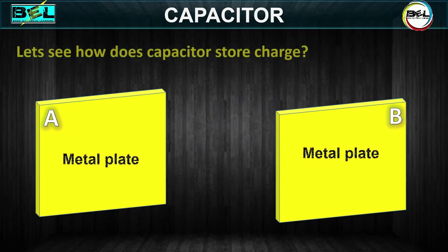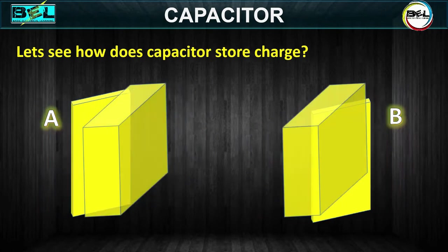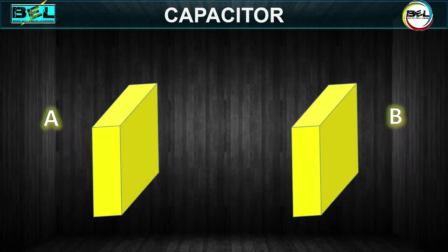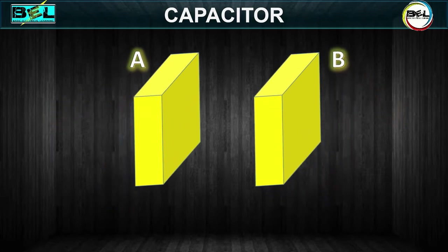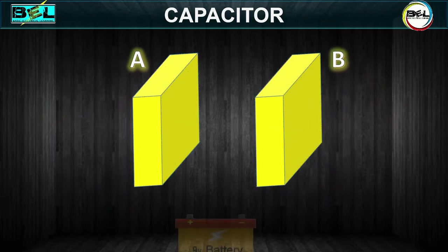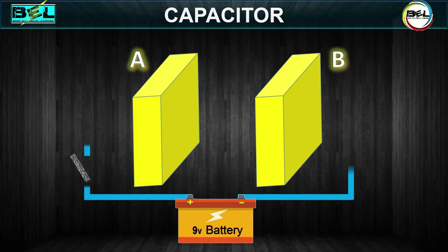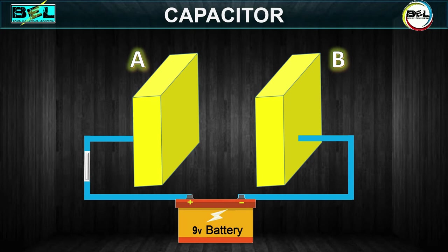Let's see how a capacitor stores charges. When a capacitor is connected across a source of direct current, such as a storage battery, and the switch is then closed, the plate marked A becomes positively charged and the plate marked B becomes negatively charged.